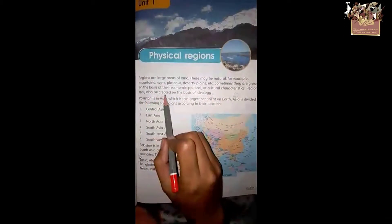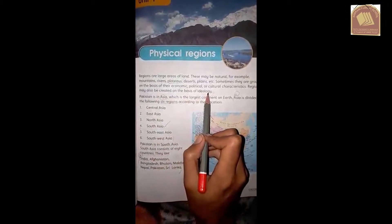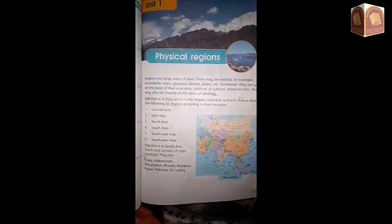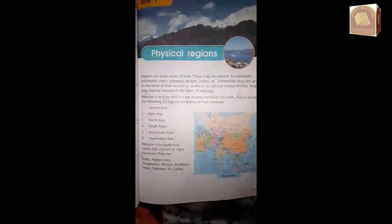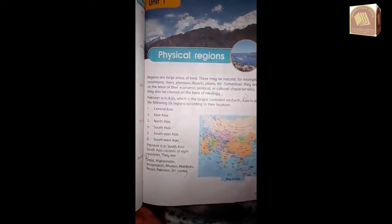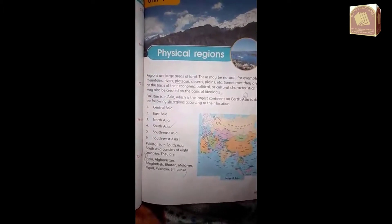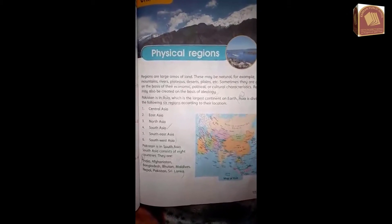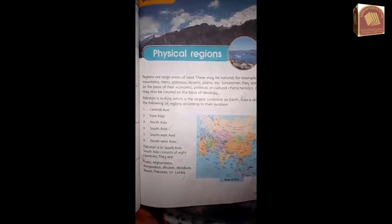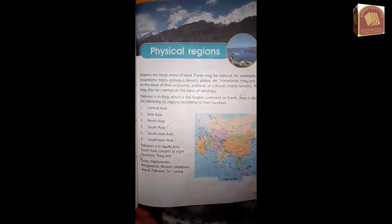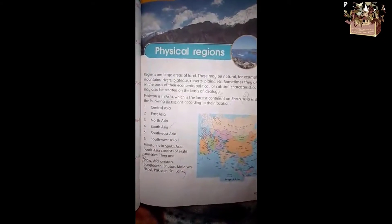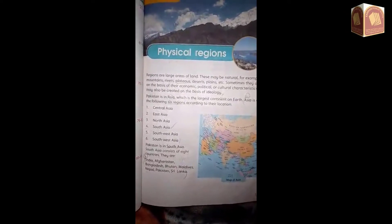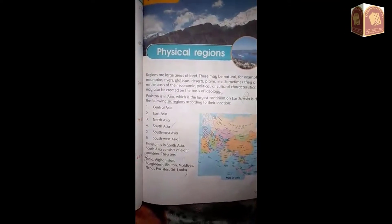Regions may also be created on the basis of ideology. Bachon, aap jis jagah par reh rahe hain, woh sabse pehle Barr-e-Sagheer tha. Jis mulk mein reh rahe hain — India, Pakistan, Sri Lanka, Maldives, aur Bangladesh — yeh sab ek jagah par rehte the. Iske baad inko unki different characteristics ke basis par regions mein divide kar diya gaya, jahan Hindu community India mein aur Muslim community ek Muslim country mein bani. The economic, political, and cultural things were built in different regions.